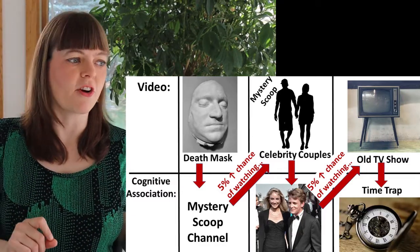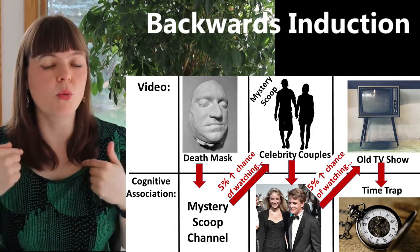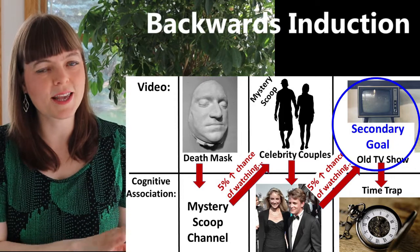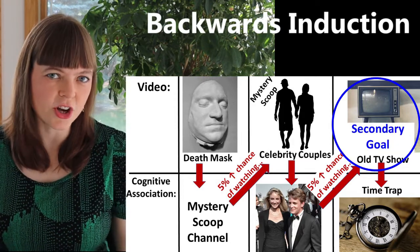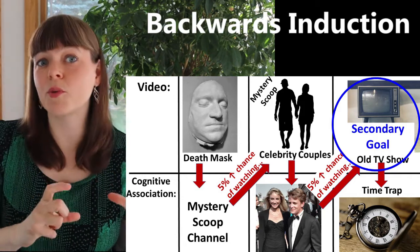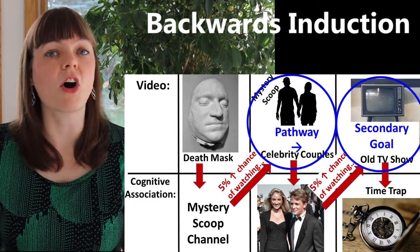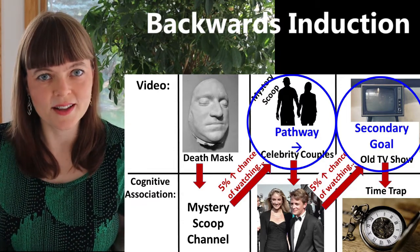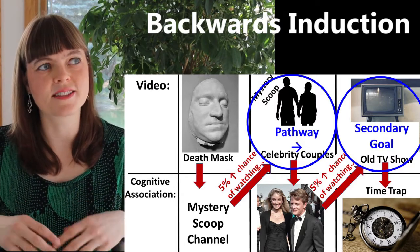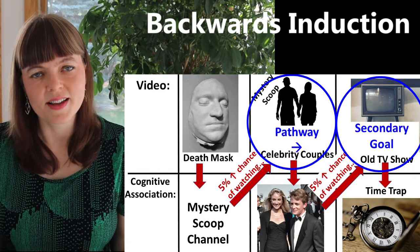So we want to figure out how the algorithm's brain is working. The algorithm has a goal of getting me to watch a bunch of old TV show clips — that's its secondary goal. Its primary goal is to keep me on platform, but it knows I tend to get hooked on old TV show clips. So it might notice that after someone watches a celebrity couples video, they have a much higher probability of clicking on a video from old TV shows. The algorithm doesn't know why — but the reason is it's showing celebrity couples who met on TV shows, making viewers curious about those shows.